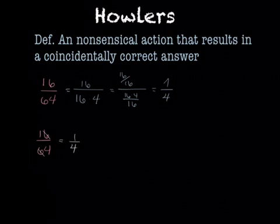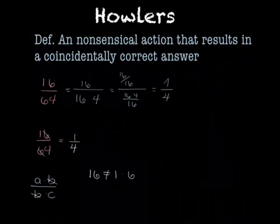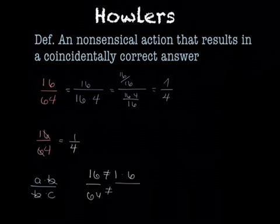I was counting on the idea that A times B over B times C can cancel, and at that point I can cancel the B's because there's the common factor. But in this case, 16 does not equal 1 times 6, 64 is not equal to 6 times 4, and we can't cancel that way. That's not true.